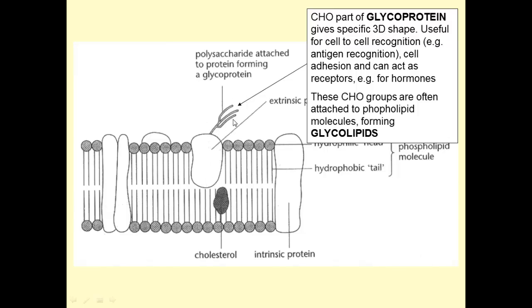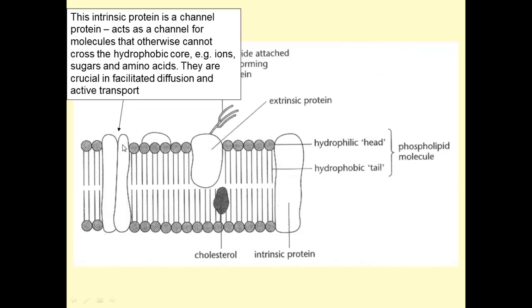Glycoprotein is a protein with a bit of carbohydrate attached to it. And that gives this glycoprotein a very specific three-dimensional shape. Now, that very specific three-dimensional shape is extremely useful for cell-to-cell recognition, such as for antigen recognition. Cell adhesion, which presents binding to other cells. And it can act as a receptor, such as for hormones. These carbohydrate groups are also sometimes attached not onto a protein, but onto a phospholipid. And so maybe you could draw another one like this. That would be a glycolipid. So, that's one part. Glycoprotein, glycolipid.